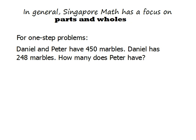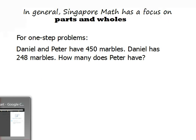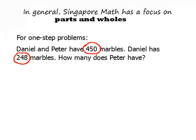Let's start with a really easy problem, one that you could actually go ahead and do with the algorithm you're used to, so that you know what the answer is and it will help everything fit together a little more easily. Daniel and Peter have 450 marbles. Daniel has 248 marbles. How many does Peter have? I'm going to approach this the same way I would approach any problem, by looking at what numbers I have. So I see 450 and 248, and let's circle those numbers. Then the second step is to underline the actual question, which is: how many does Peter have?